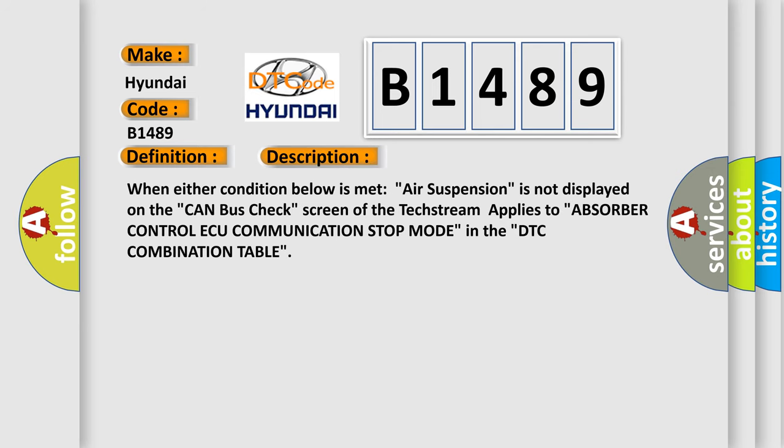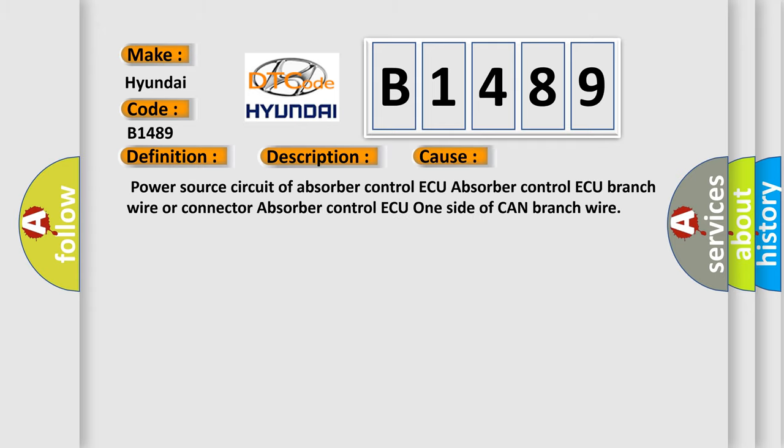Here is a short description of this DTC code. When either condition below is met — air suspension is not displayed on the CAN bus check screen of the tech stream — it applies to absorber control AQ communication stop mode in the DTC combination table. This diagnostic error occurs most often in these cases: power source circuit of absorber control AQ, absorber control AQ branch wire or connector, and absorber control AQ one side of CAN branch wire.